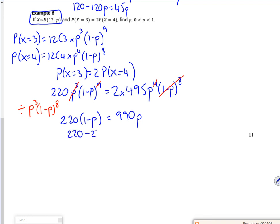So I've got 220 minus 220P is 990P. So 220 over 1210 is P, which is 2 over 11, P.